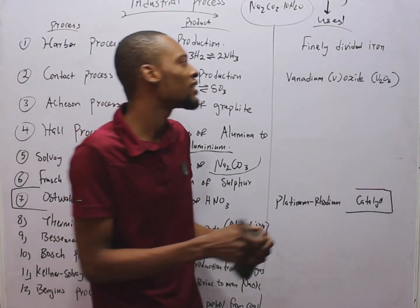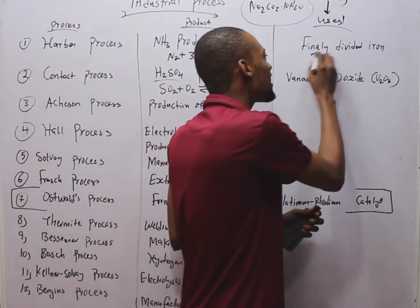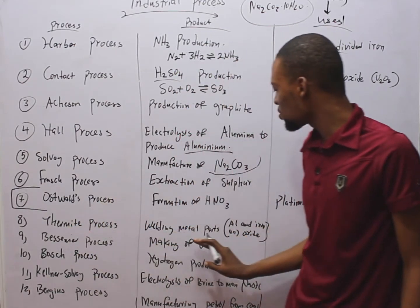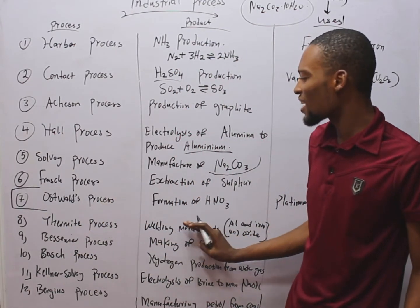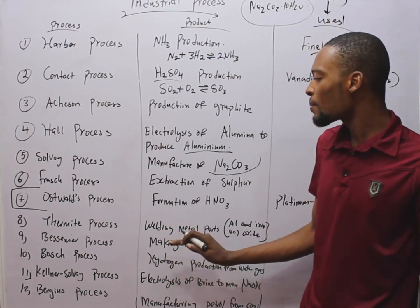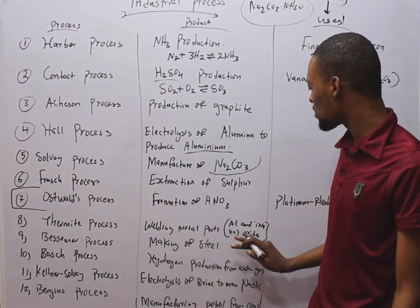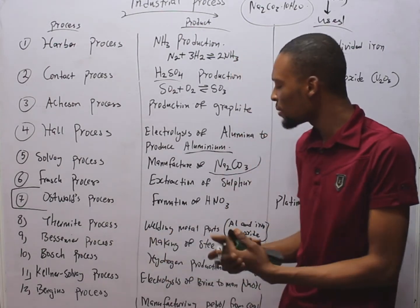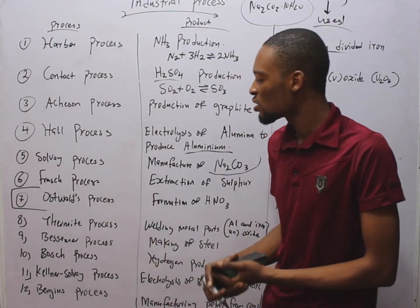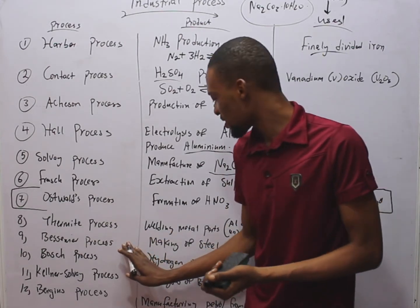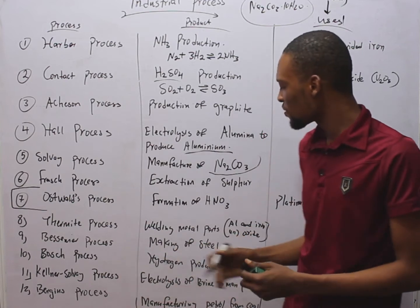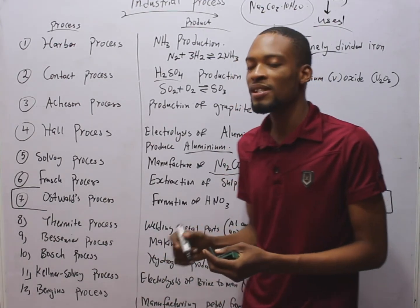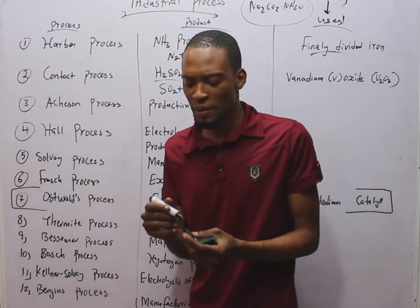The Thermite process is used to weld metal parts together. Thermite is made up of aluminium and iron(III) oxide — that is thermite, used to weld metal parts together. The Bessemer process is used in the manufacture or making of steel.